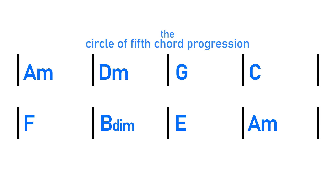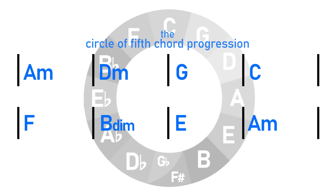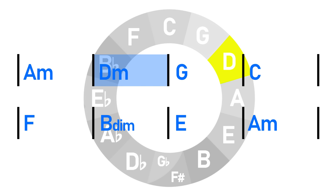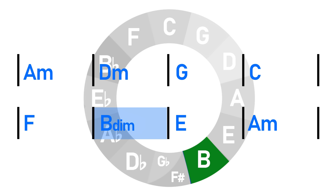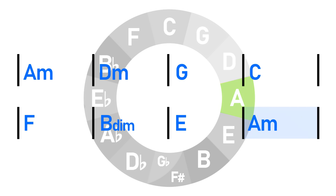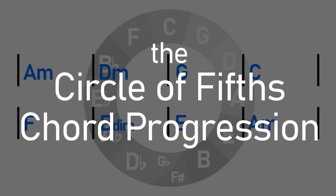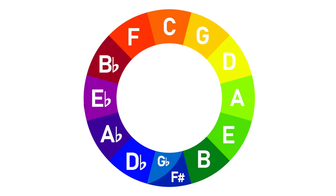Now the circle of fifths chord progression that we've looked at so far today travels anti-clockwise around the circle. However, we can have other chord progressions that take advantage of the circle of fifths — for example, what about if we traveled clockwise around the circle?